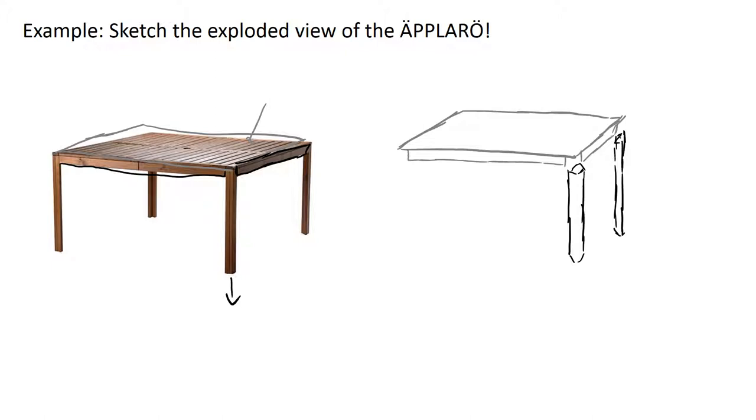And same with this table leg on the left hand side. There we go. We can do our dotted lines to show that they're exploded off.